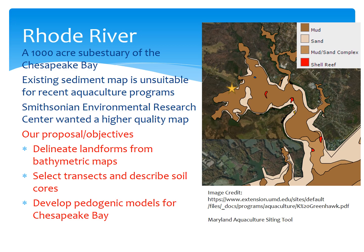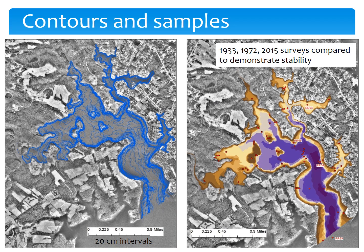The Smithsonian Environmental Research Center, which is where that star is on the map, was interested in producing a higher quality map here and potentially applying the concepts elsewhere. So we proposed to delineate landforms from bathymetric maps, to select transects and transects that describe changes throughout the landscape by describing soil cores along those, and to develop pedogenic models for Chesapeake Bay that we can apply elsewhere. We started with point data from 1933 and 1972 and added some of our own from 2015. We produced contour maps and digital elevation models, which you see here, with red dots on the digital elevation model showing some of our sampling points. Look at the contour map and you can see a lot of landscape complexity — a shelf runs along the edge of much of the Rhode River with a sharp slope as it transitions into the deep water cove or central channel environment.